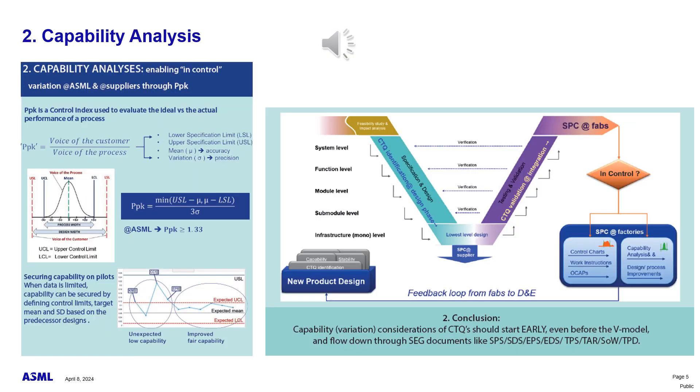Capability analysis. Capability analysis quantifies the performance of a process by checking if the process is actually doing what it should do. At ASML, we measure performance capability by using PPK, a metric that evaluates the process by considering the target specifications on a CTQ defined by the voice of the customer with respect to a certain variation level described by the process.